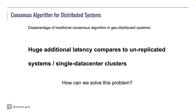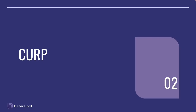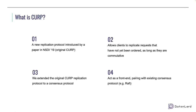So how can we solve this problem? What is CURP? CURP is a new replication protocol introduced by a paper in NSDI 2019. This is the original CURP protocol — it is a replication protocol, not a consensus protocol. CURP allows clients to replicate requests that have not been ordered yet, as long as they are commutative. We extended the original CURP protocol to a consensus protocol and used it in our project X-Line.